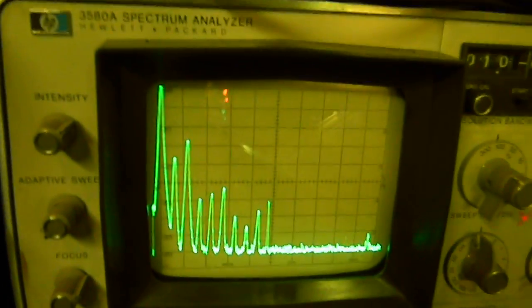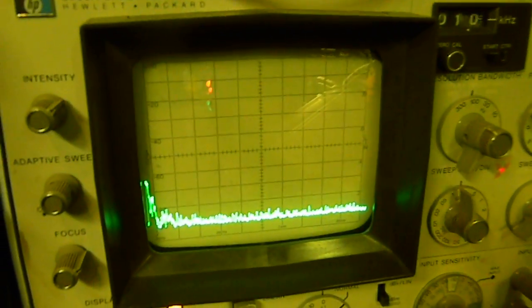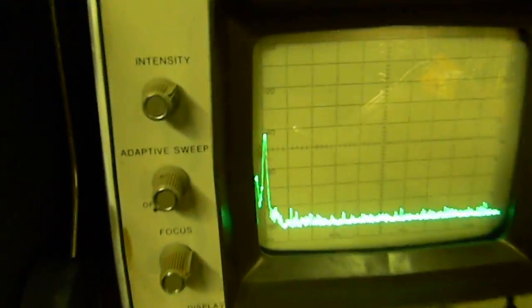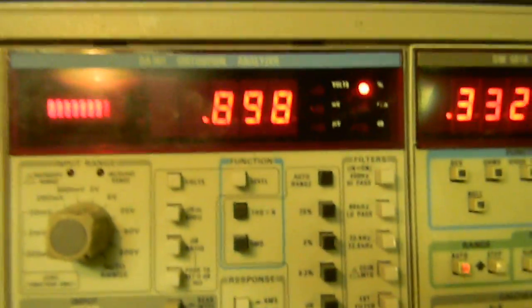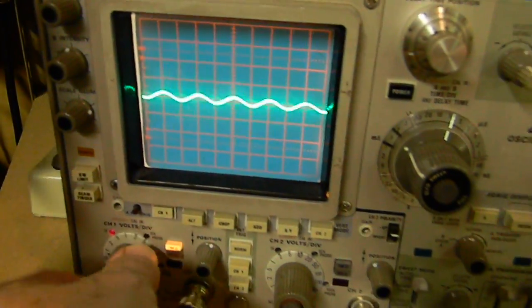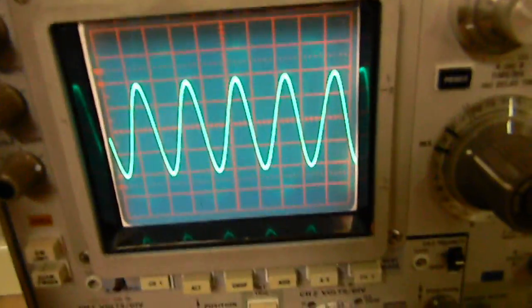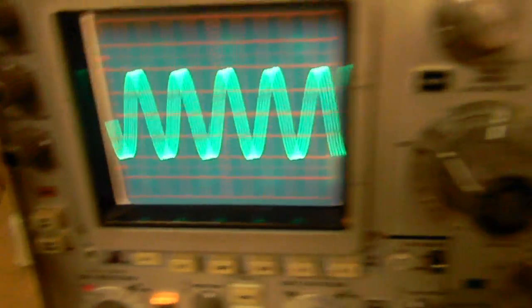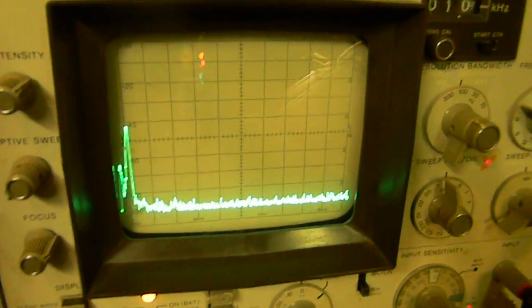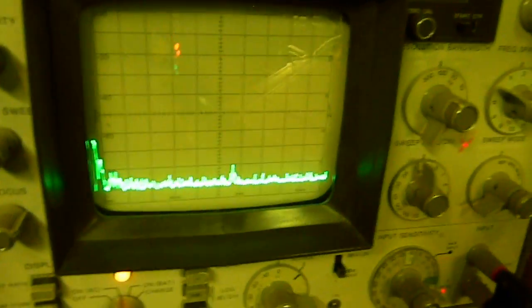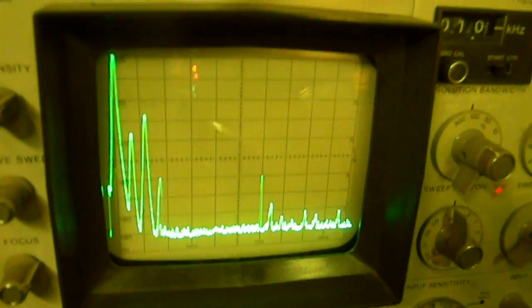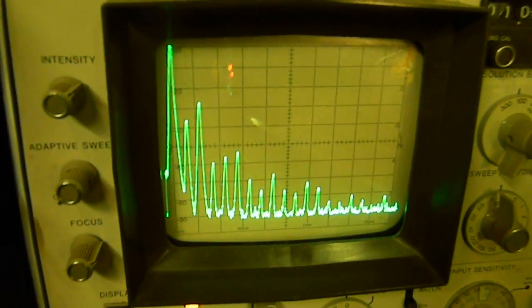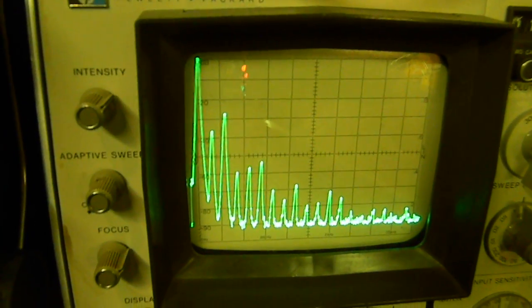To the signal going into it, which actually looks like this. Let's see if I've got it hooked up there. Yeah, that's what's going in, a pure signal at that level THD. And a signal that looks like that is transformed into this by the output tubes and the transformer circuitry.